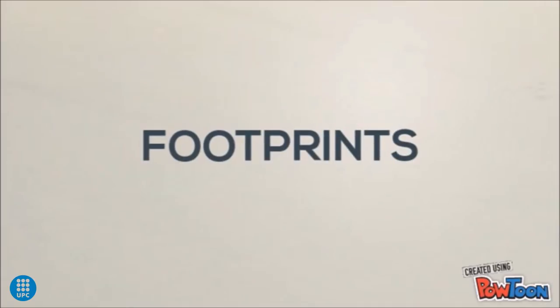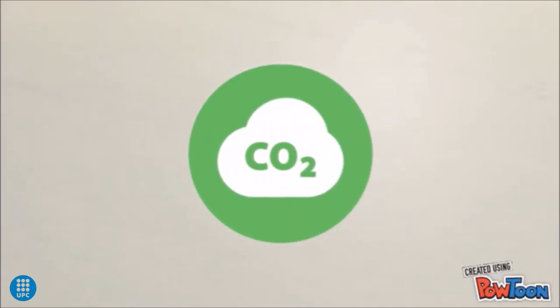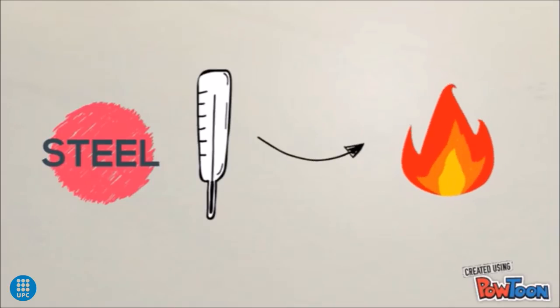Now, let's take a look at the footprints. The main footprint that these materials have is the CO2 footprint. Steel, as we said, has a very high melting point. So, a big amount of energy is needed to produce and shape it.